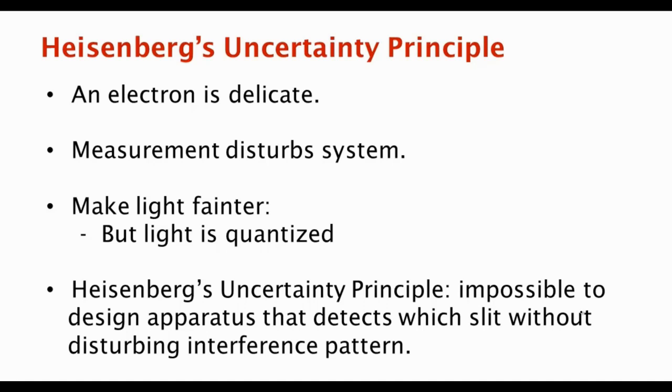Quantum systems are very delicate, and an electron is very delicate. If you measure it, if you try to look at it, it disturbs the system. You can make the light fainter and fainter to try to not disturb the system. But the fainter you make the light, the less your chance of actually performing a measurement. There is no free lunch. If you're going to measure, if you get an outcome, then you've disturbed the system.